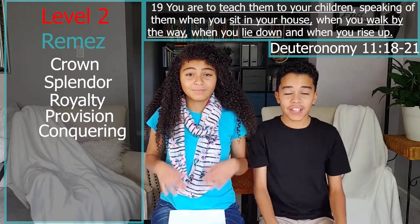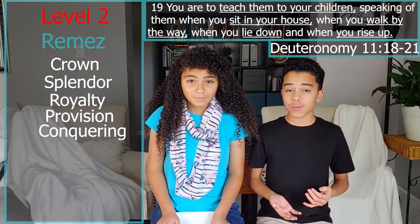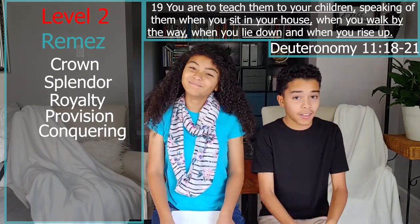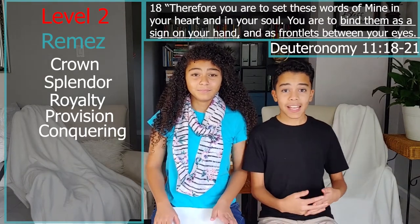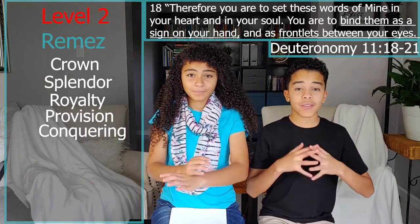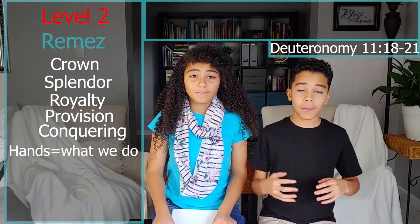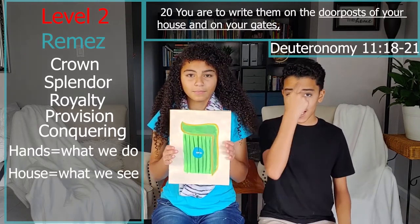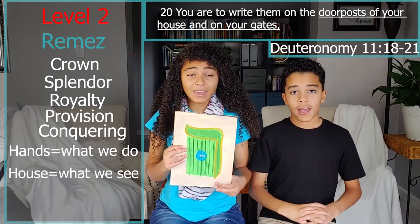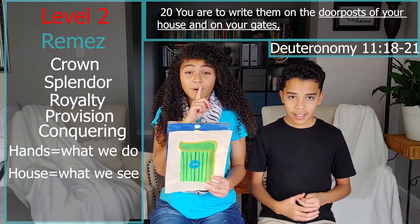So it says we have to teach them diligently to our children — when you sit in your house, when you walk by the way, when you lie down, and when you rise up. It says that we have to bind them as a sign upon our hands. We have to honor God with what we do with our hands. And we need to bind them on the doorposts of our house. We need to put the word between our eyes, on our house. And we need to honor God with our mouth, our tongue — with what we say.